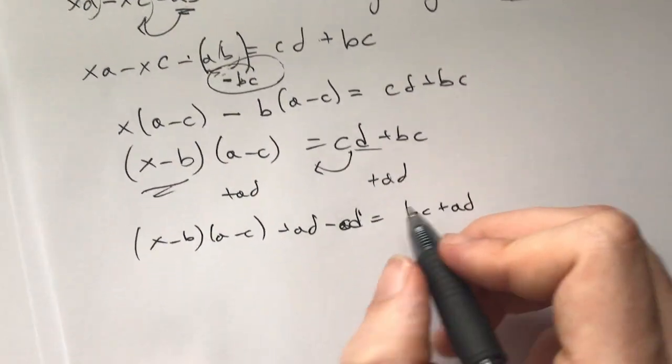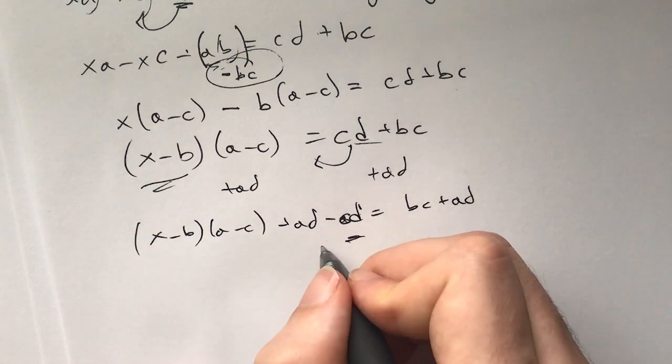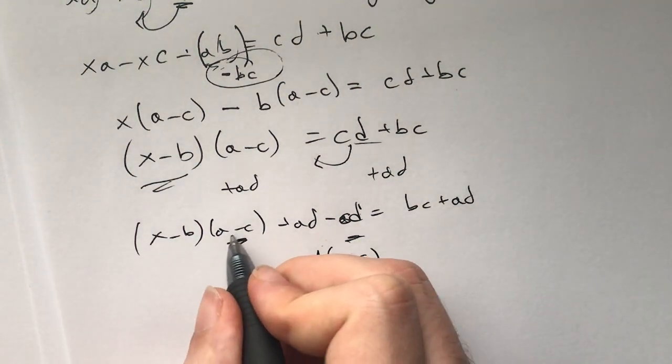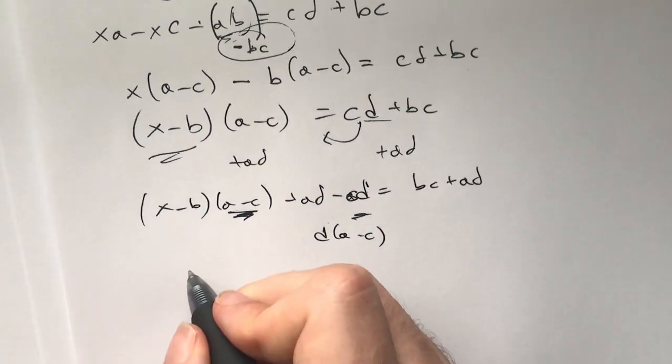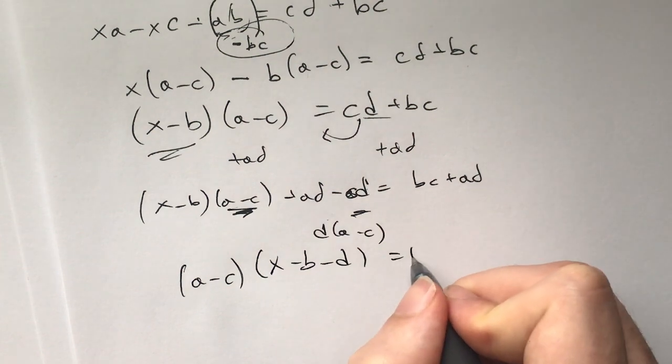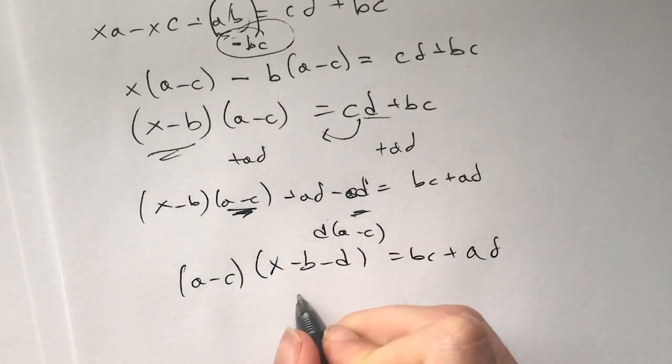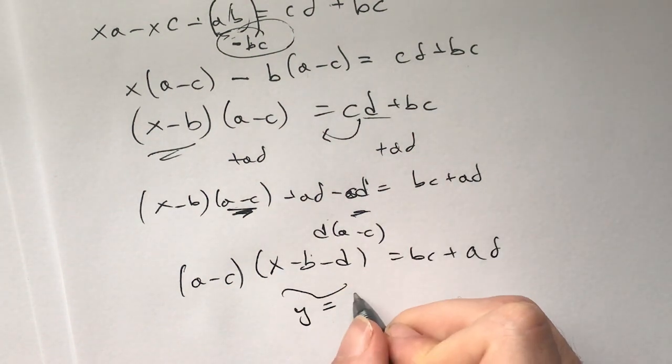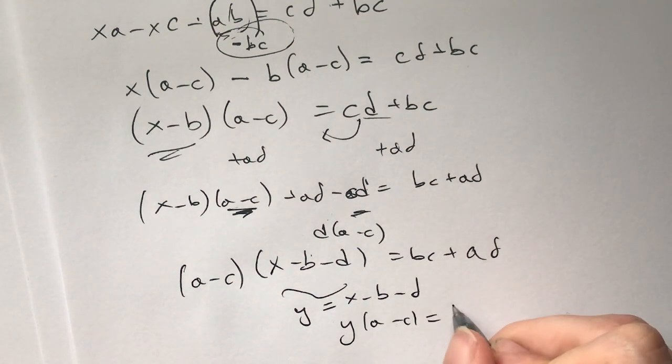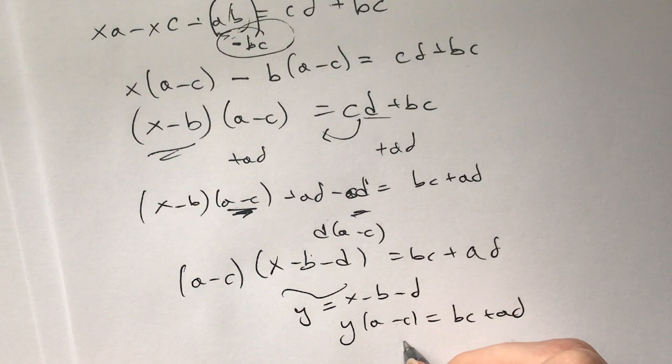And now I can factor this out, the d out, and I'll get d times (a-c). I factor those out and get (a-c) times (x-b-d) equals bc plus ad. Now for y equals x minus b minus d, we have y times (a-c) is bc plus ad, which implies that (a-c) divides bc plus ad.